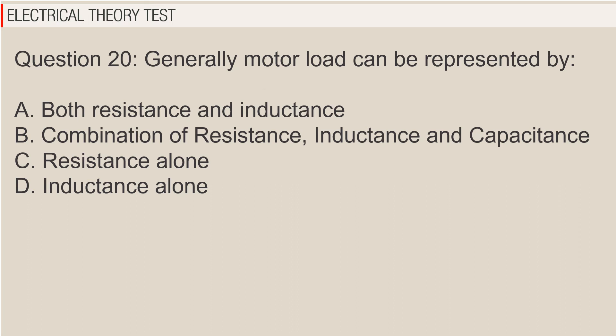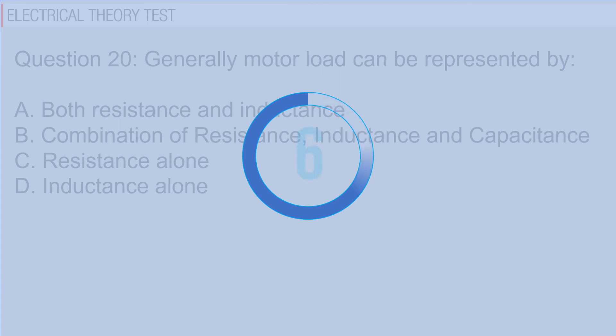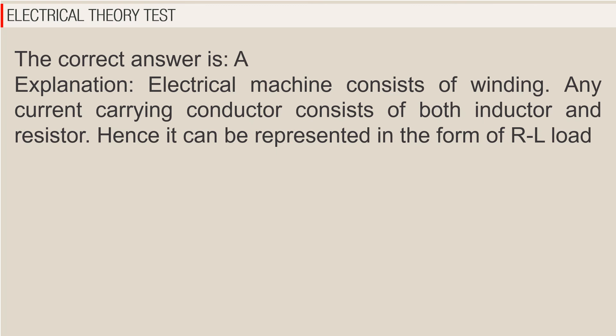Question 20: Generally motor load can be represented by A. Both resistance and inductance, B. Combination of resistance, inductance and capacitance, C. Resistance alone, D. Inductance alone. The correct answer is A. Explanation: electrical machine consists of winding. Any current carrying conductor consists of both inductor and resistor, hence it can be represented in the form of RL load.